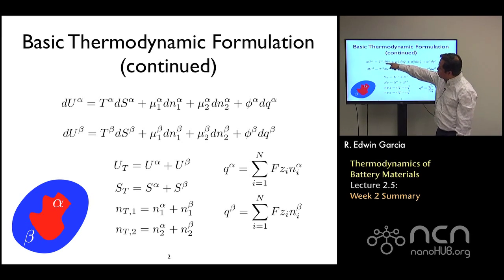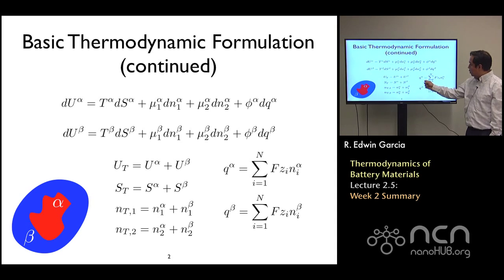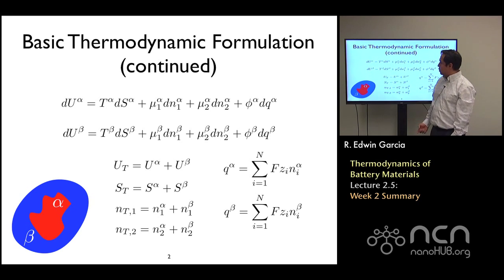We started by first formulating the conditions, the first and second law statements of the internal energy for both the alpha and the beta phase. You can think of one phase as the battery material, the other one as a reference phase. We introduced conditions for that potential to develop, such as the energy is conserved, the system at equilibrium, the entropy is not increasing or decreasing, the mass is conserved, and that there exists a relationship between charge and mass.